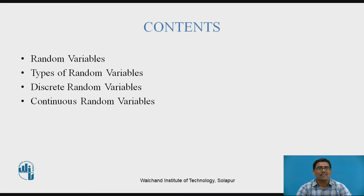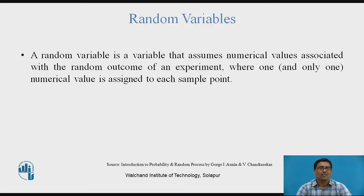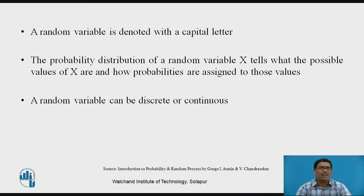A random variable is a variable that assumes numerical values associated with random outcomes of an experiment, where one and only one numerical value is assigned to each sample point. For each sample point, only one value is assigned, and the output we get is called a random variable.